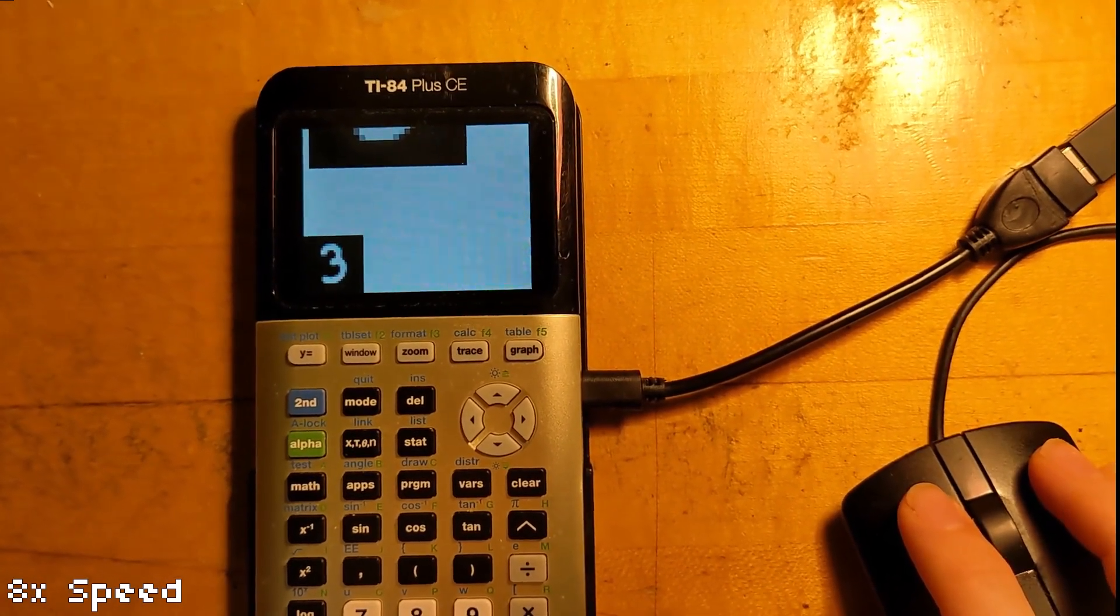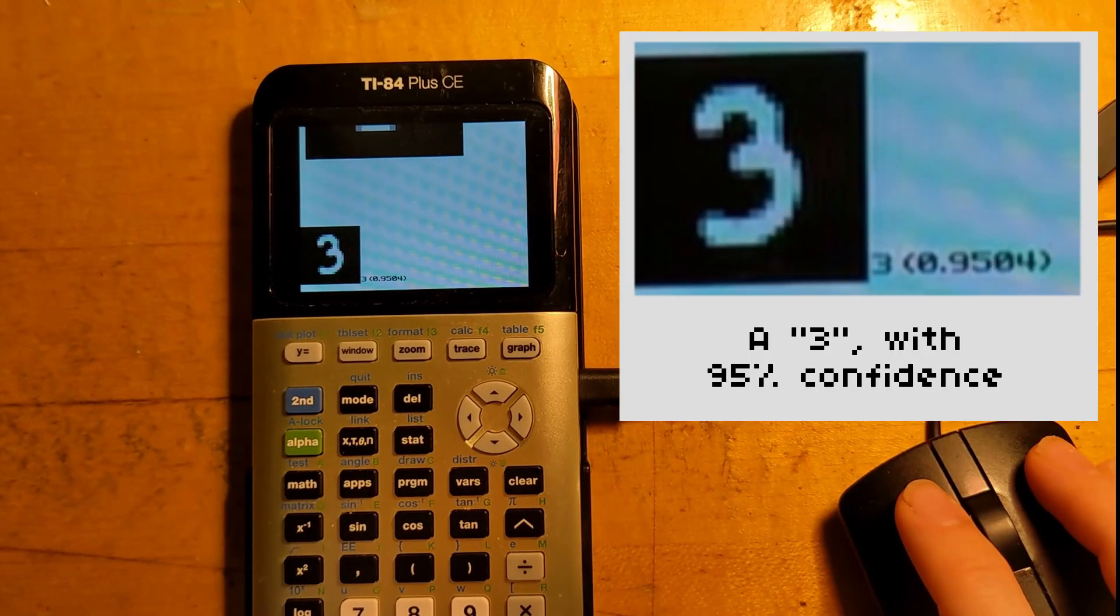You can use a mouse connected to the calculator to draw a digit, and in about 18 seconds it will tell you what digit it is.